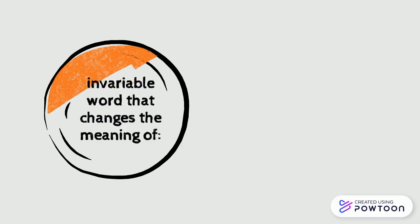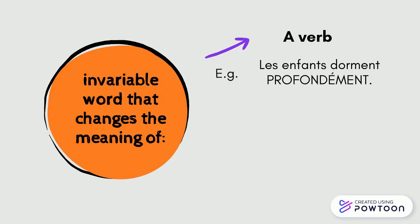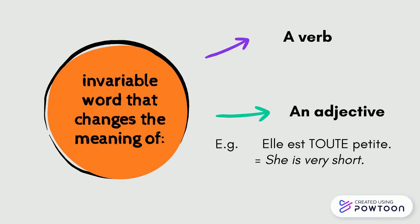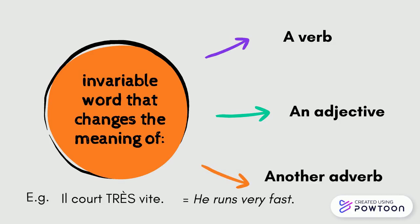An adverb is an invariable word that changes the meaning of either a verb, for instance, les enfants dorment profondément, the children are sleeping soundly; an adjective, for instance, elle est toute petite, she is very short; or another adverb, for example, il court très vite, he runs very fast.